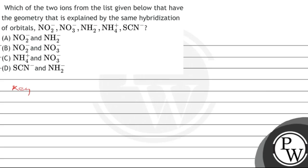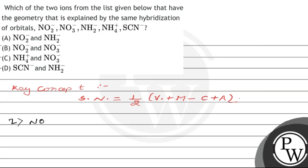Please note that the key concept here is the steric number, which is calculated by: one-half of the valence electrons of the central atom, plus the number of monovalent atoms, minus the cationic charge, plus the anionic charge. Let's evaluate all species.